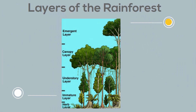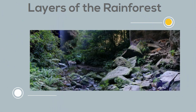In fact there are so many trees in the rainforest that they can be divided into four layers. At the very bottom is the forest floor. It only receives 2% of the sunlight.